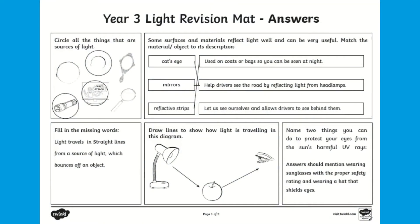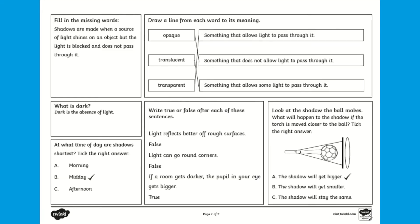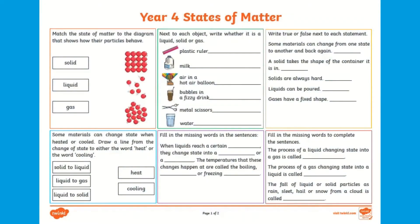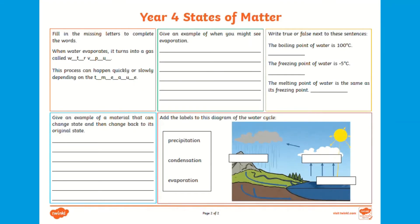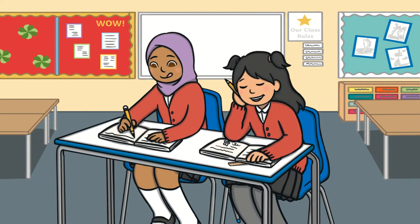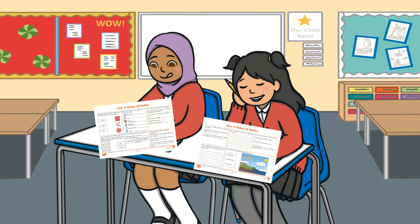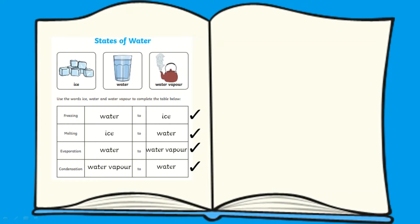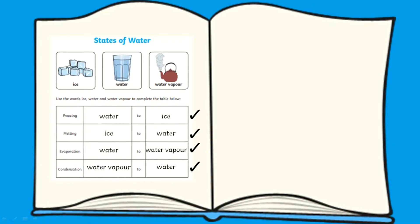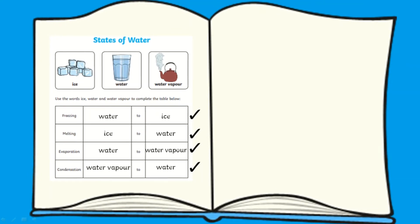Once children have completed the maps, the answers to the questions have been included if you wish to mark, or even for children to peer or self-assess. Not only do these sets of questions offer a way to assess children's learning, they can also be helpful as a home learning task if you wish to extend learning beyond the classroom, or even as an activity for children to get on with during any spare time that they have. You could even use these maps as a gap task or next step for when you are marking.